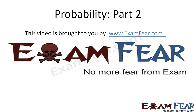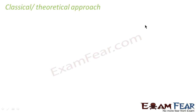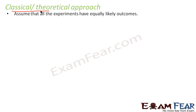This video on probability part 2 is brought to you by examfear.com. Before watching this video, please make sure that you have watched part 1. We will study the classical or theoretical approach. The earlier empirical method had the disadvantage that results were not consistent and it was not always possible to actually perform the experiment, so we use the classical and theoretical approach instead.